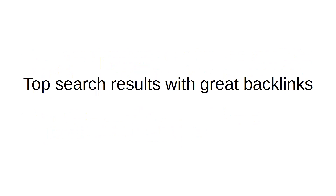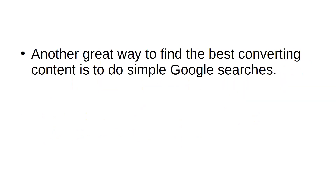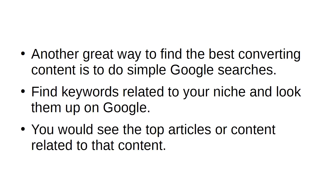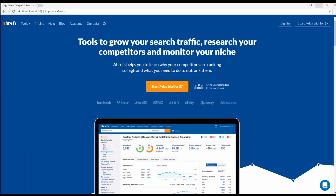Top Search Results with Great Backlinks. Another great way to find the best converting content is to do simple Google searches. Find keywords related to your niche and look them up on Google. You would see the top articles or content related to that topic. Use tools like ahrefs.com to see the backlinks of these articles.